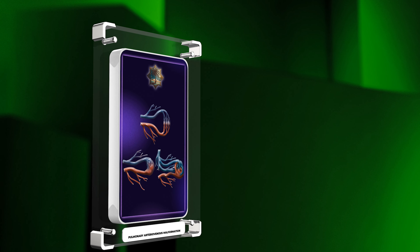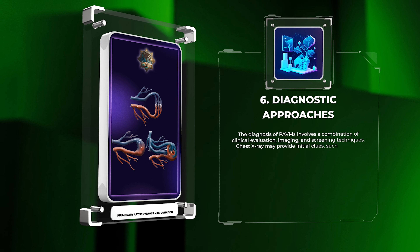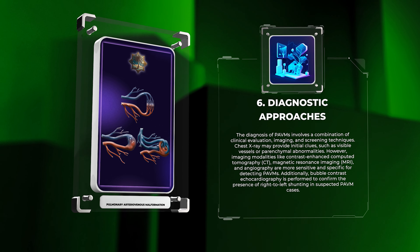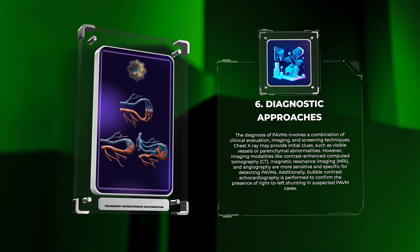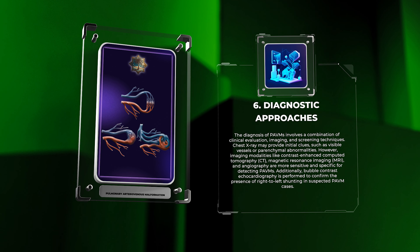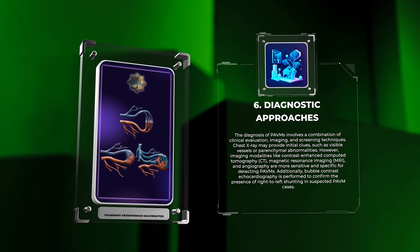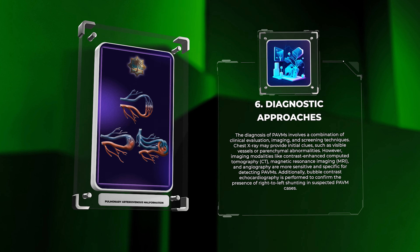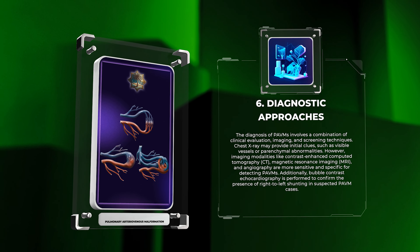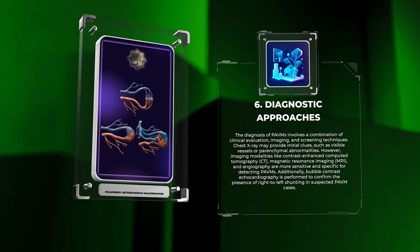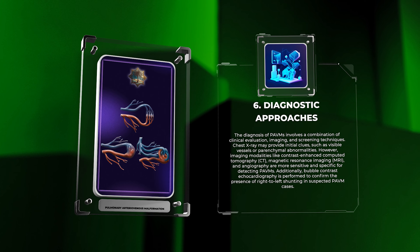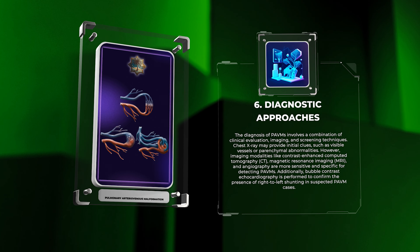The diagnosis of PAVMs involves a combination of clinical evaluation, imaging, and screening techniques. Chest X-ray may provide initial clues, such as visible vessels or parenchymal abnormalities. However, imaging modalities like contrast-enhanced computed tomography, CT, magnetic resonance imaging, MRI, and angiography are more sensitive and specific for detecting PAVMs. Additionally, bubble contrast echocardiography is performed to confirm the presence of right-to-left shunting in suspected PAVM cases.